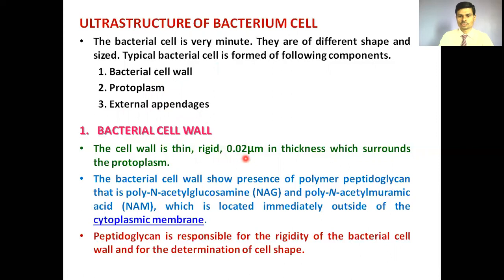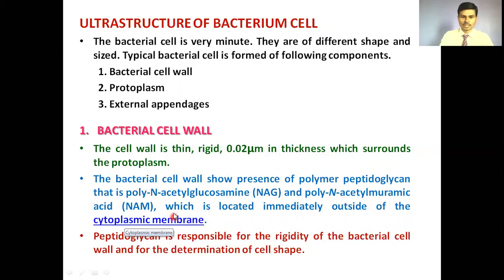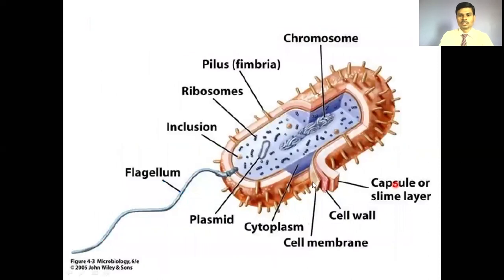The bacterial cell wall is thin and rigid — 0.02 micrometers in thickness — and surrounds the protoplasm. It is made up of a polymer called peptidoglycan, consisting of poly-N-acetylglucosamine (NAG) and N-acetylmuramic acid (NAM), located immediately outside the cytoplasmic membrane. Peptidoglycan is responsible for the rigidity of the bacterial cell and the determination of cell shape.